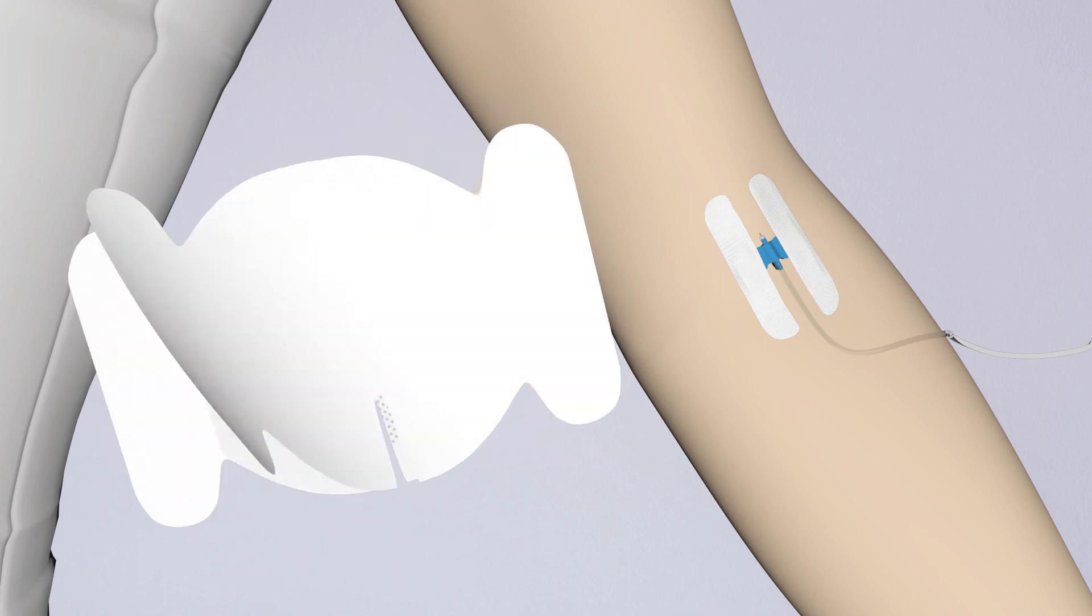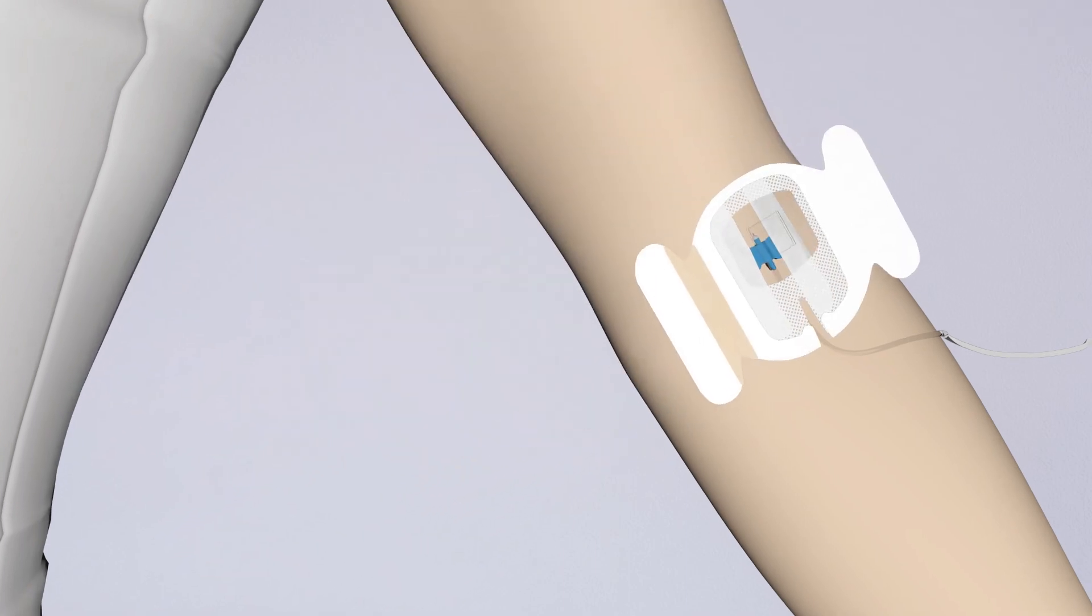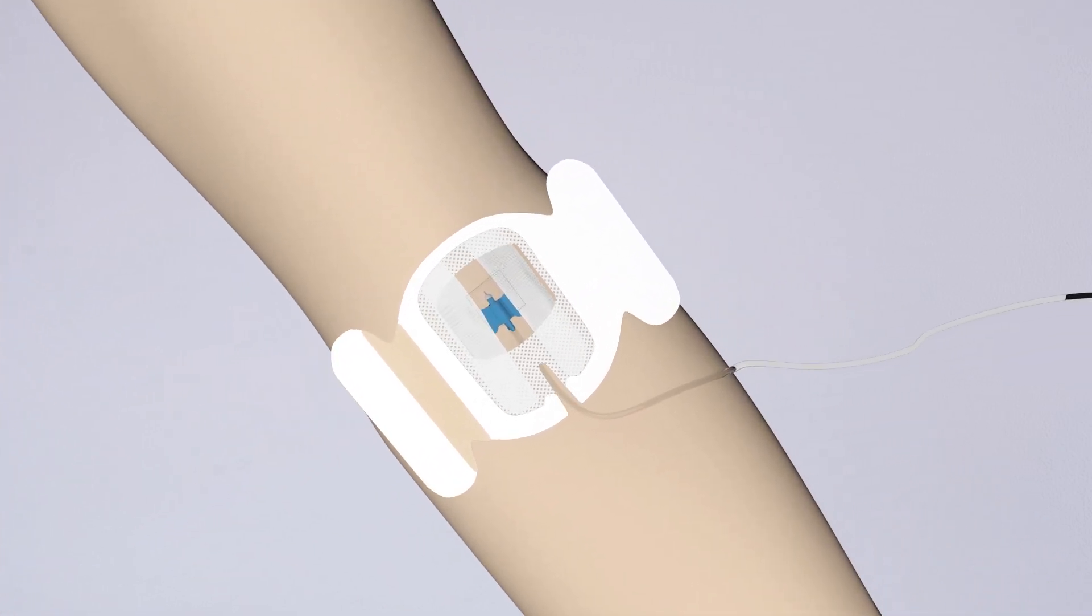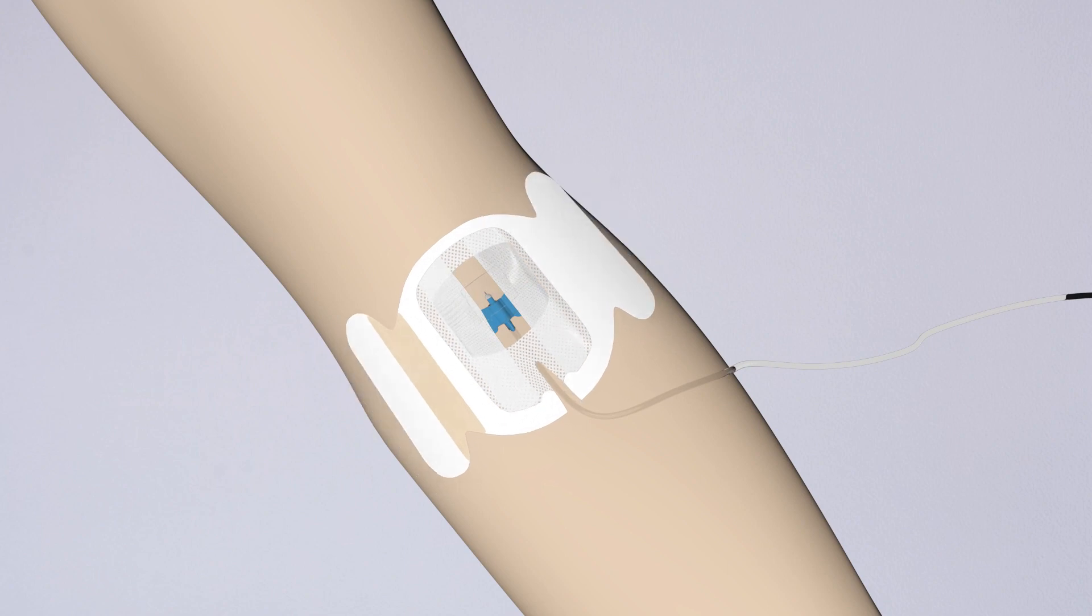3. Peel off the release liner. 4. Centre the gel pad of the dressing over the insertion site and press gently. Do not stretch the dressing during application, as tension can cause skin trauma.